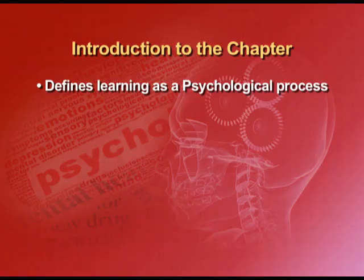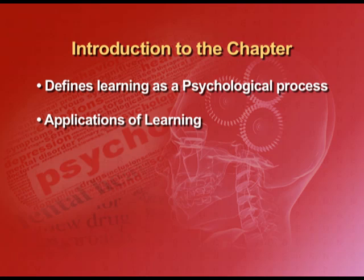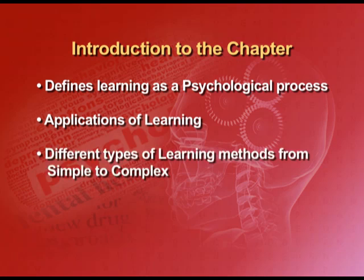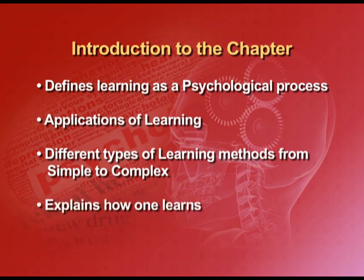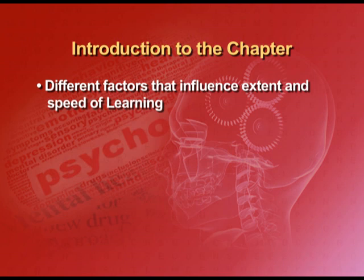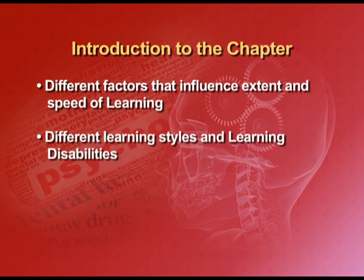Let me first introduce you to what this chapter has. It defines learning as a psychological process, deals with the application of learning, different types of learning, the methods which range from simple to complex. It explains how we learn and also talks of different factors that influence the extent and speed of learning. The different learning styles and learning disabilities are also discussed in this chapter.